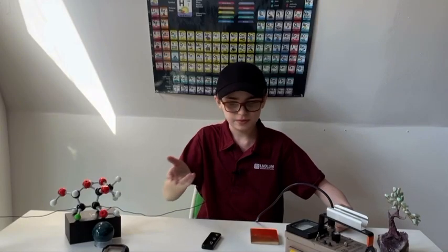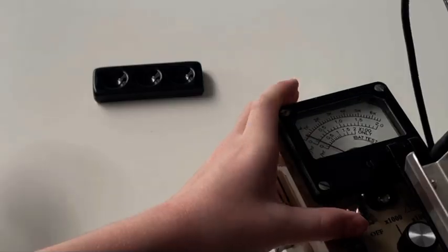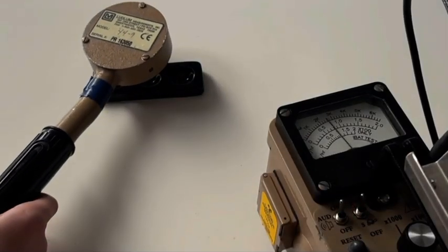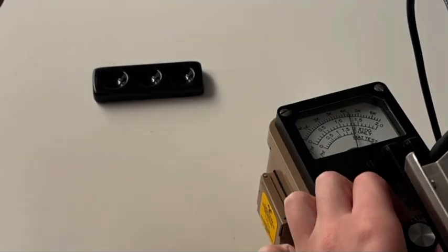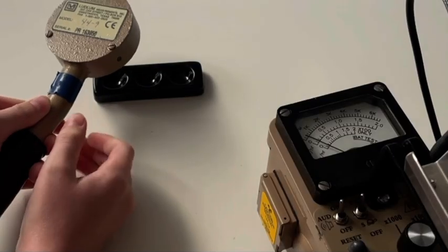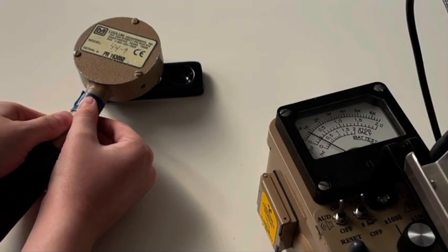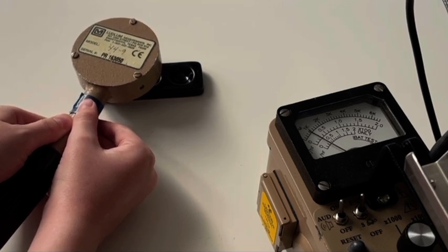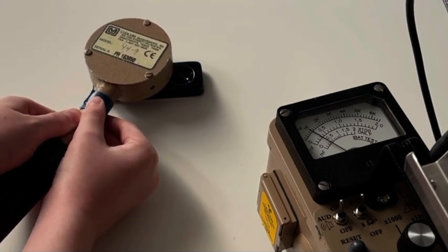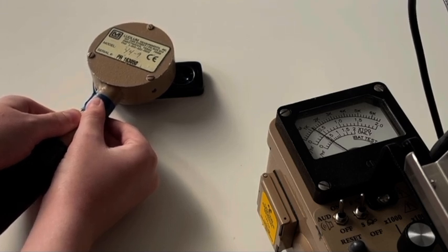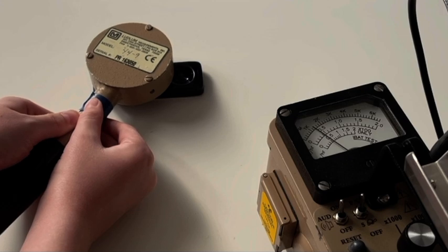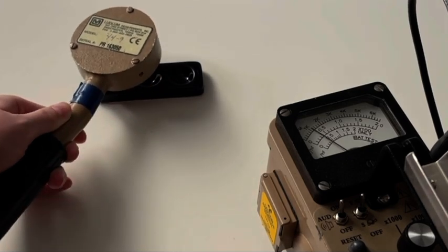But first, let's take some general measurements with the detectors I have here. The first meter we're going to use is this Ludlum model 44-9 pancake detector with a Ludlum model 14C. We're going to go right to times ten. I'm going to get as close as I possibly can without touching it to avoid contamination and get as many alpha particles as possible. About 15,000 counts per minute.